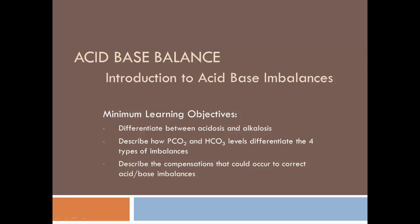So now that we understand how chemical buffers and physiological buffers help maintain acid-base balance, let's look at some of the imbalances that we see with acid-base. And so those would be acidosis versus alkalosis and how partial pressures of carbon dioxide and bicarbonate levels differentiate the four types of imbalances, and then what are the compensations to be able to correct any acid-base imbalance.